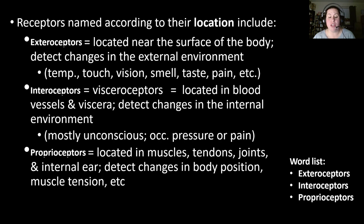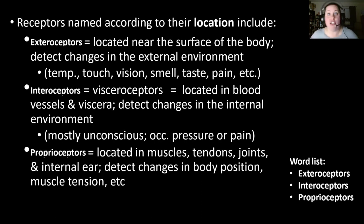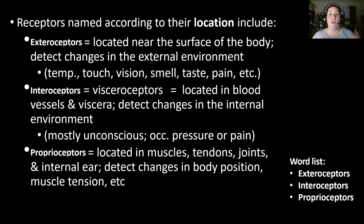Proprioceptors are located in your muscles, tendons, joints, and inner ear, detecting changes in body position. They can be fooled — for instance, when you dream you're falling and jerk yourself awake, those proprioceptors in muscles and joints sent signals making the brain think the body was falling when it was just laying in bed. For the most part, proprioceptors let your brain know what your body is doing, including muscle tension, whether you're sitting, standing, or laying down.